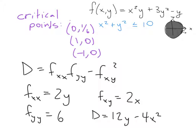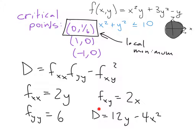So D = 12y − 4x². At the point (0, 1/6), x = 0 and y = 1/6, so D is positive, and since f_yy is always positive, this is a local minimum. At (1, 0) and (−1, 0), y = 0 so only the −4x² term remains, which is negative, meaning both points are saddles.